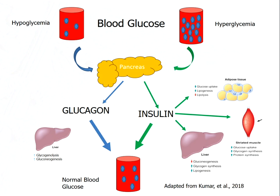If glucose levels are low, that's sensed by the pancreas, and the pancreas releases glucagon. Glucagon signals the liver to increase the breakdown of glycogen and the production of new glucose that is then released in the bloodstream in order to bring blood glucose levels back to normal. If glucose levels are high, like they are after a meal, that is sensed by the pancreas as well, and the pancreas releases insulin. Insulin acts on a number of different peripheral tissues, including adipose tissue, muscle, and the liver, in order to increase the uptake of glucose, to increase the synthesis of glycogen, which is the storage form of glucose, and to decrease the production of new glucose in the liver. So all of these actions together tend to take glucose out of the bloodstream and return blood glucose levels from that high level back to normal.